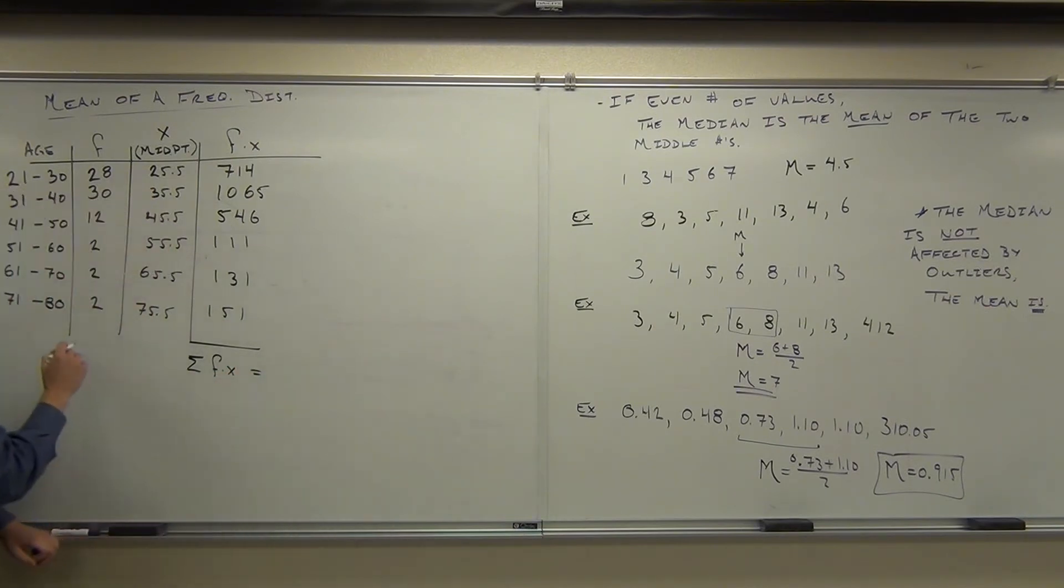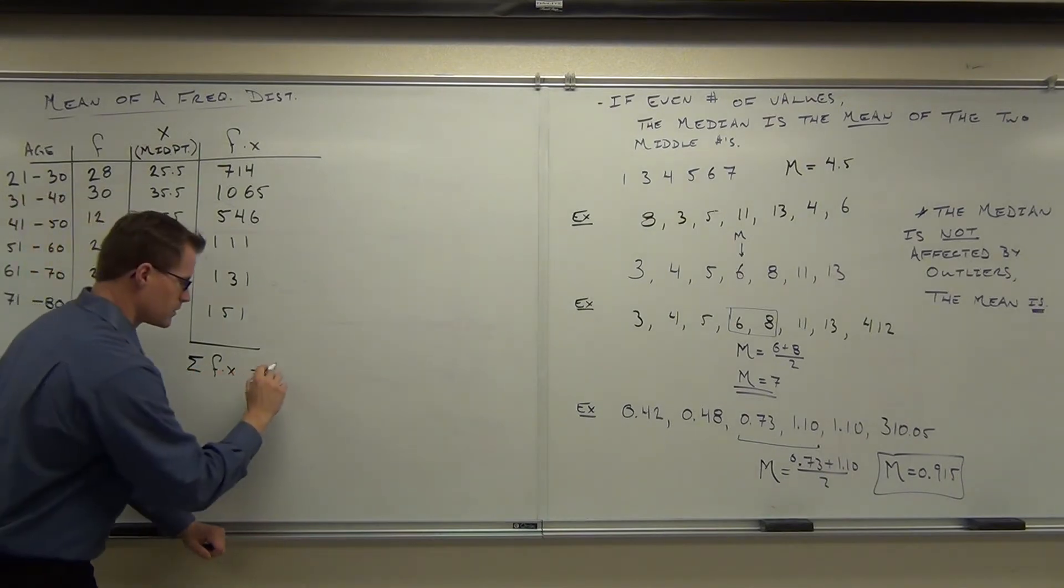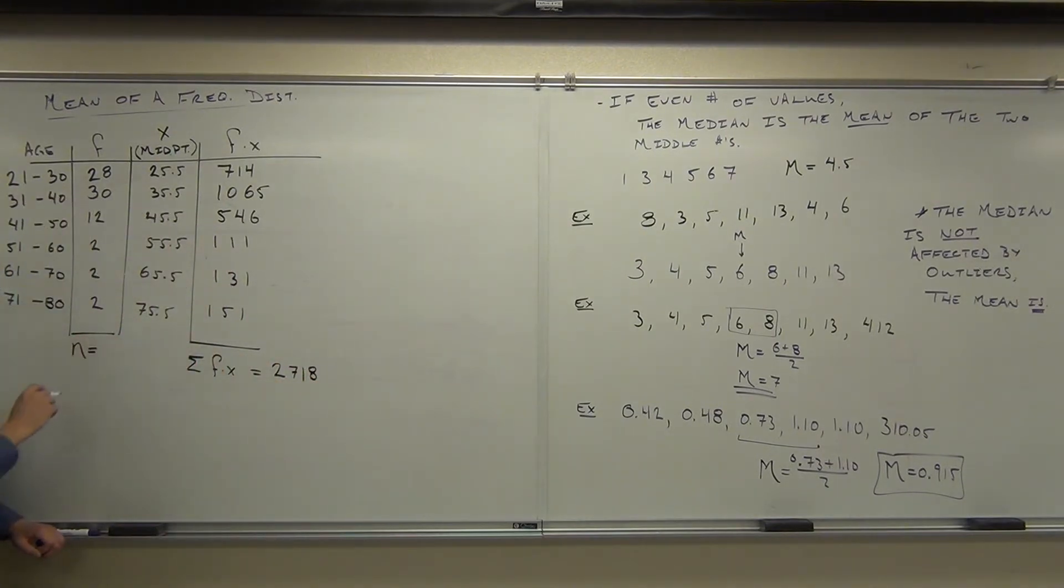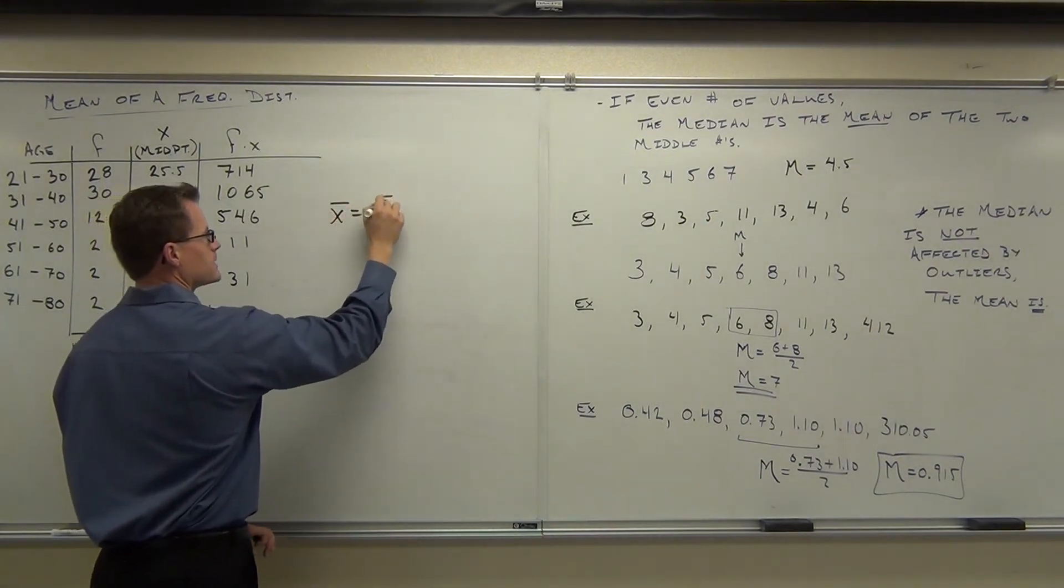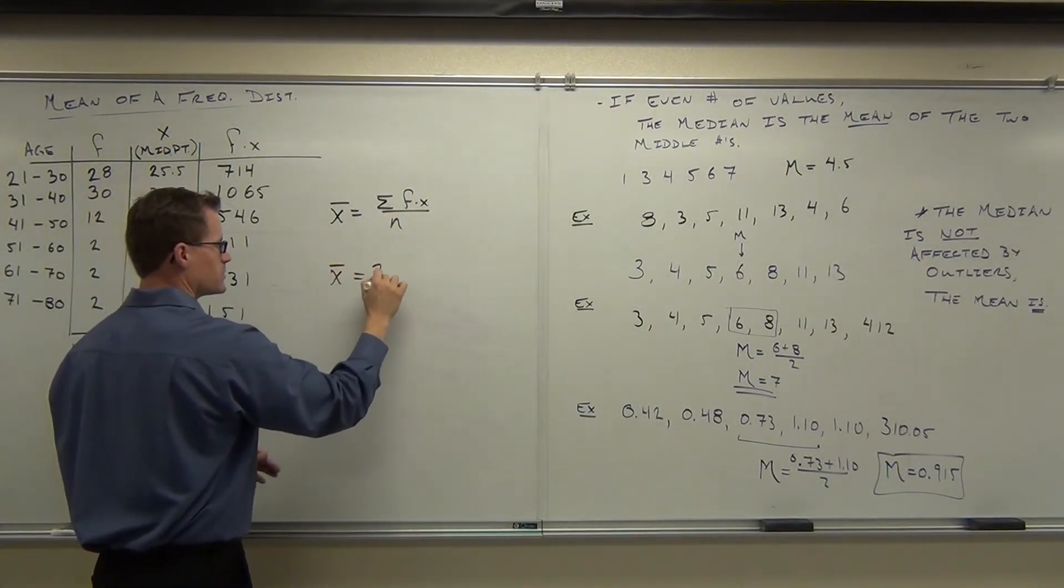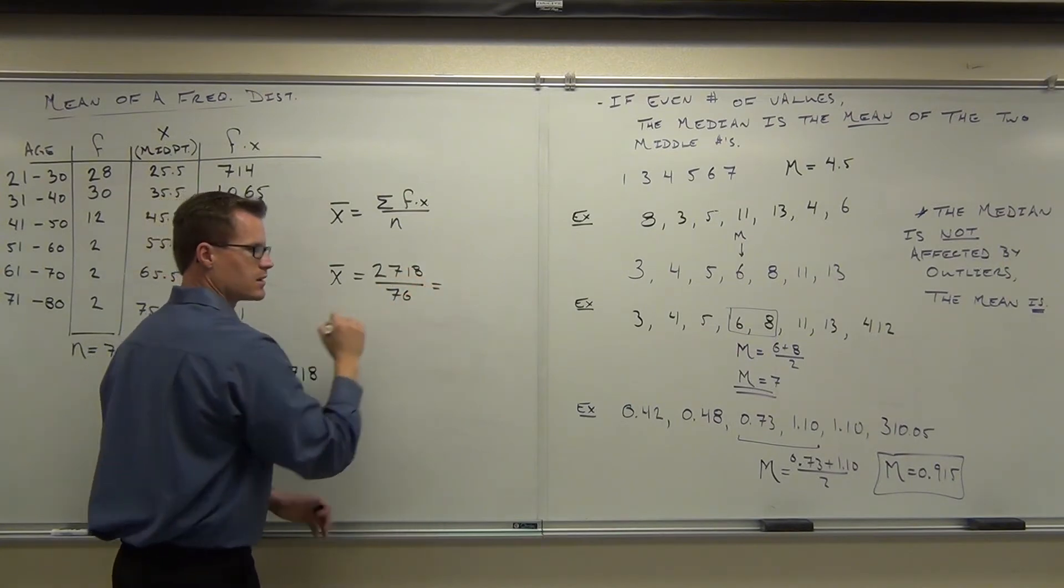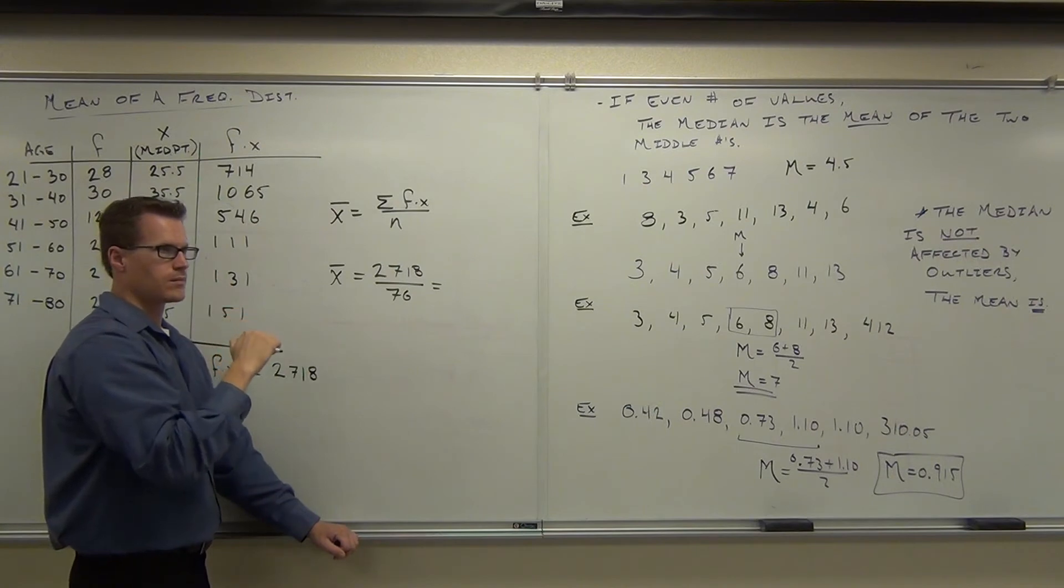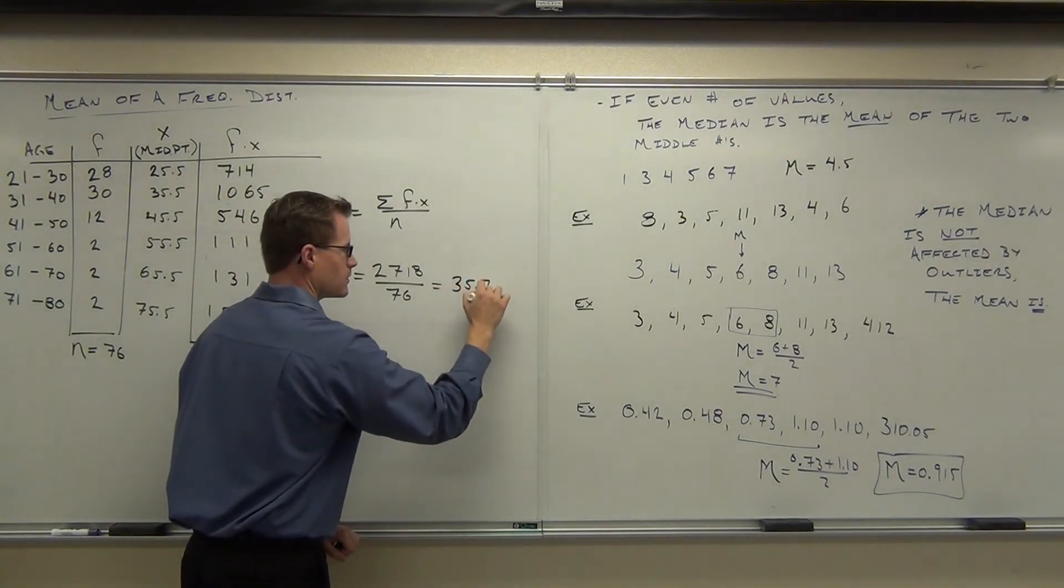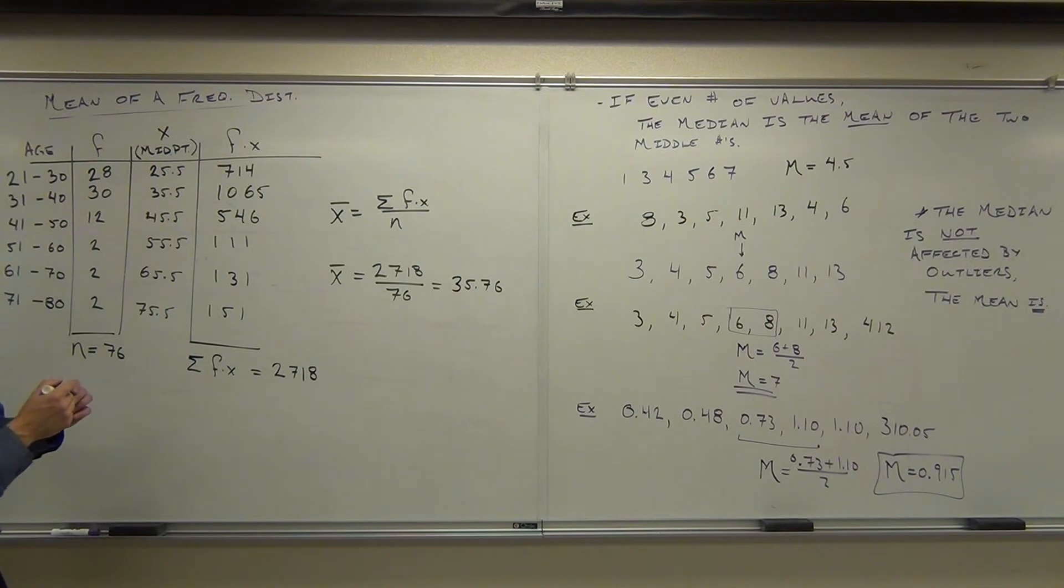So add this up for me, please. Say that louder for me. 2,718. Okay. And add this one up for me, because this is our N. 76. Perfect. Thank you. In order to find our average, what we're going to do is take the sum of f times x, which we just calculated right here, divide it by our N. So in our case, we have 2,718 divided by 76. Give me that. How much? 35.76. Perfect. Seems about right? It looks like the average is right around 35, if I consider all this stuff.